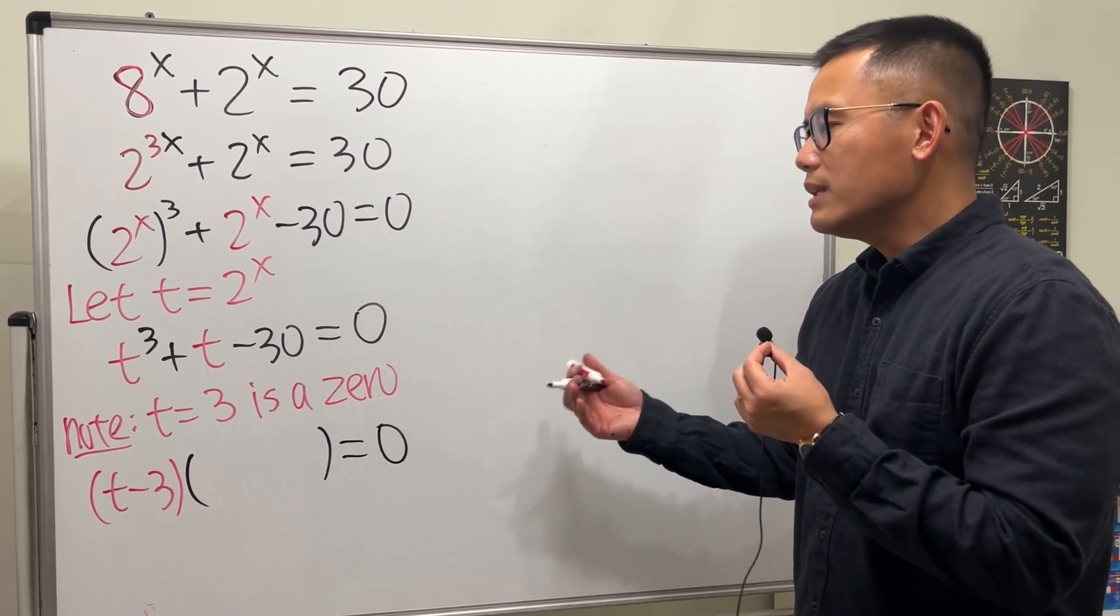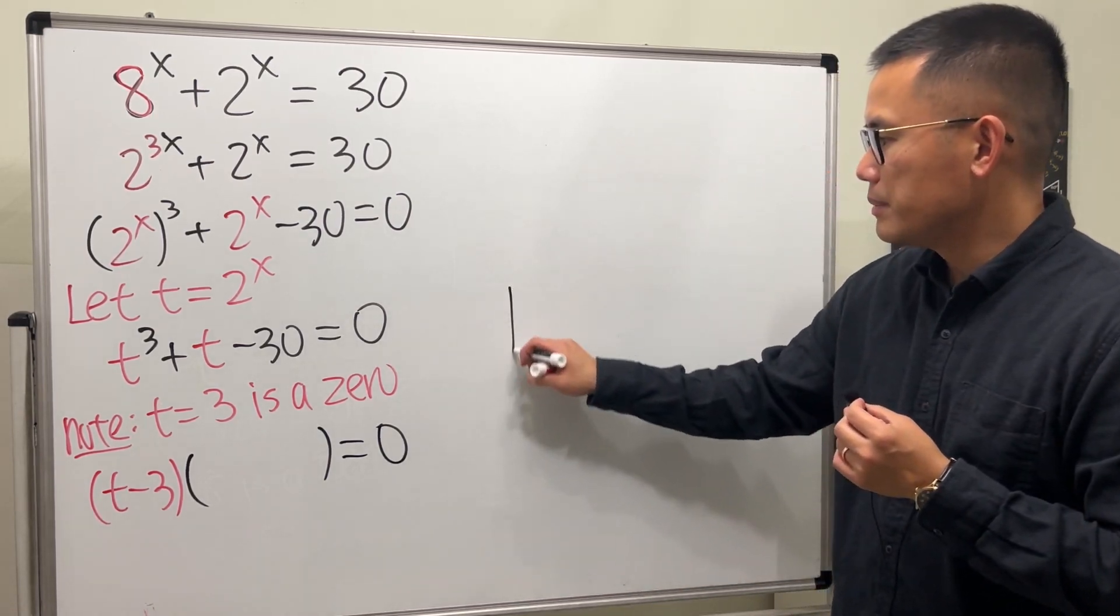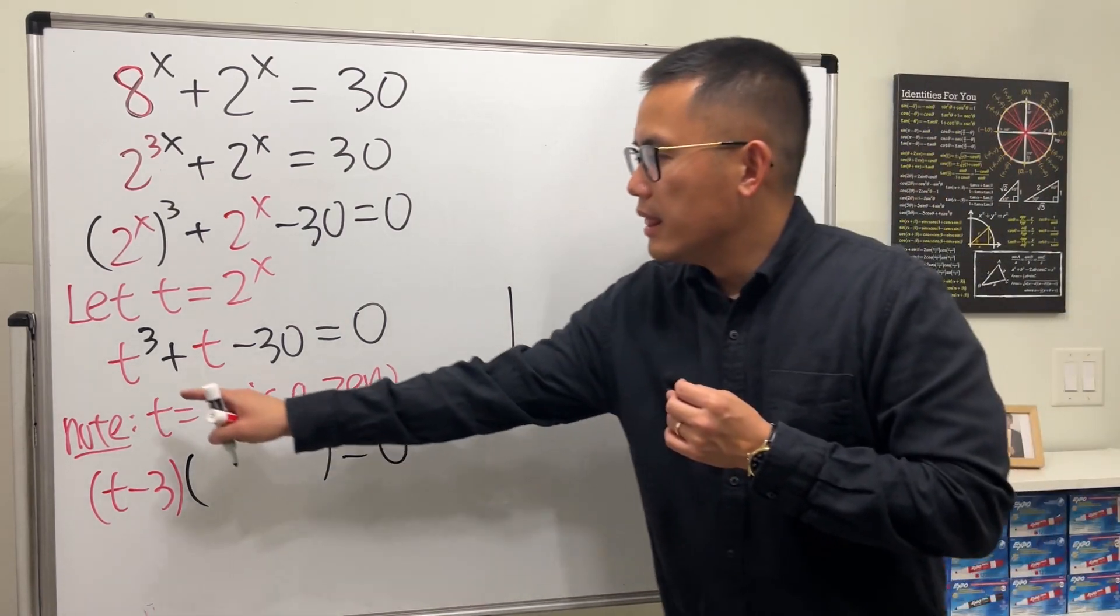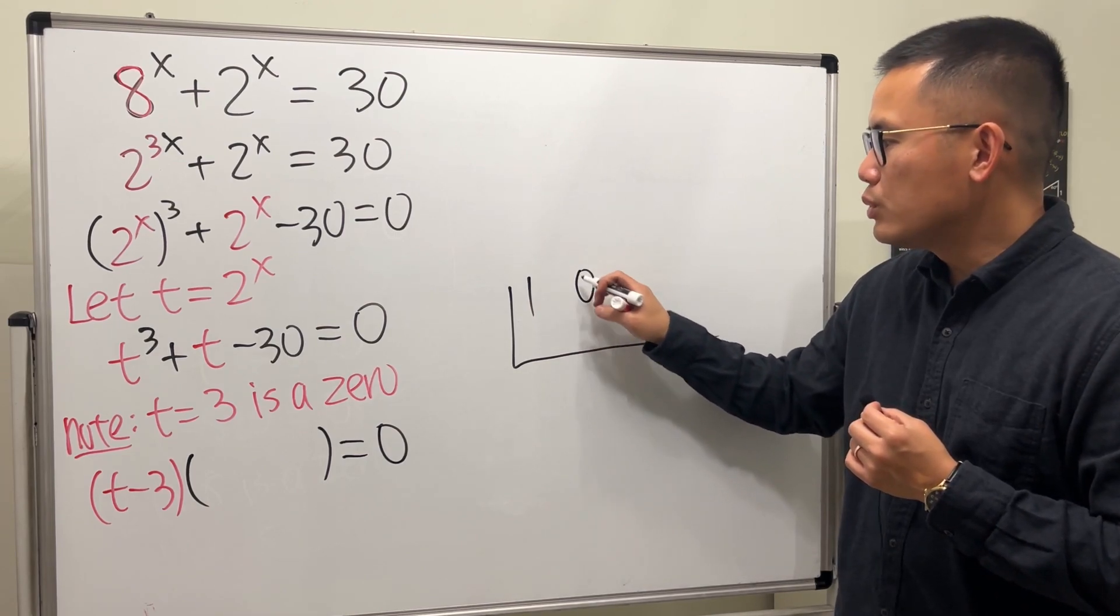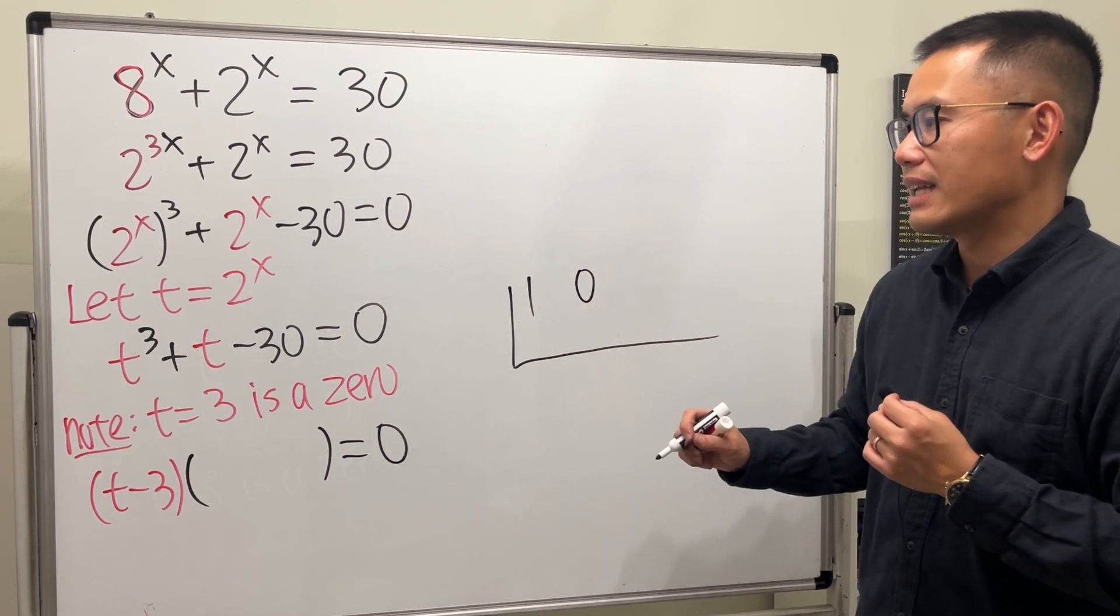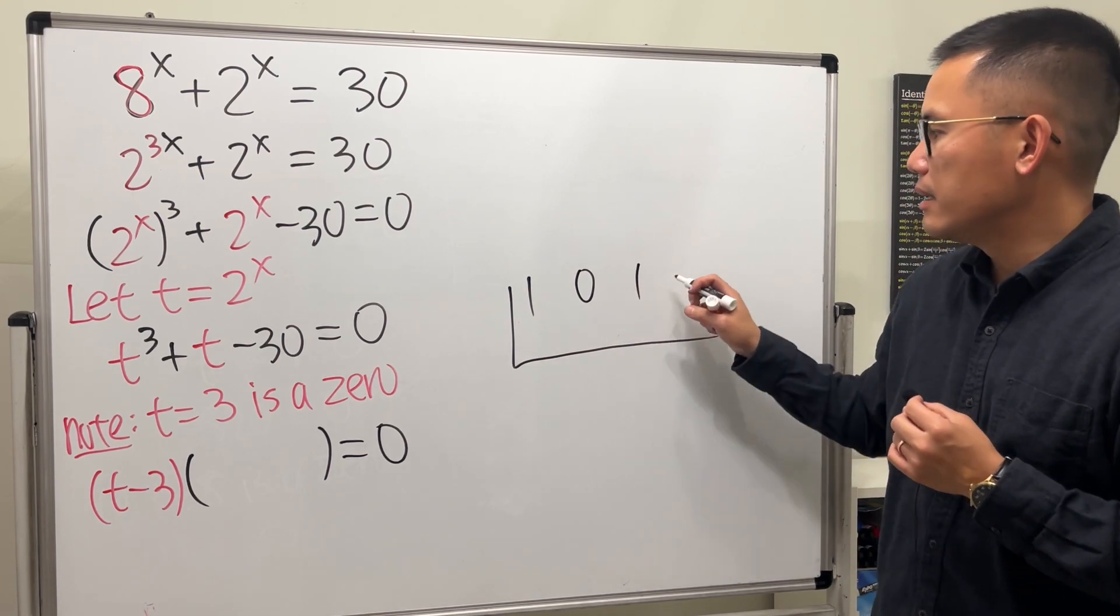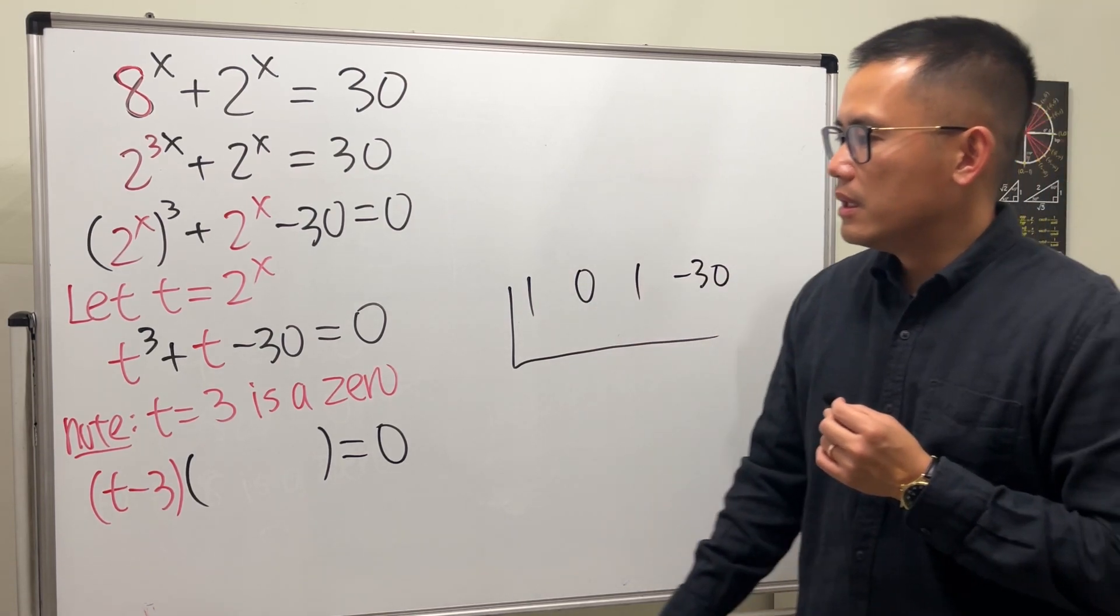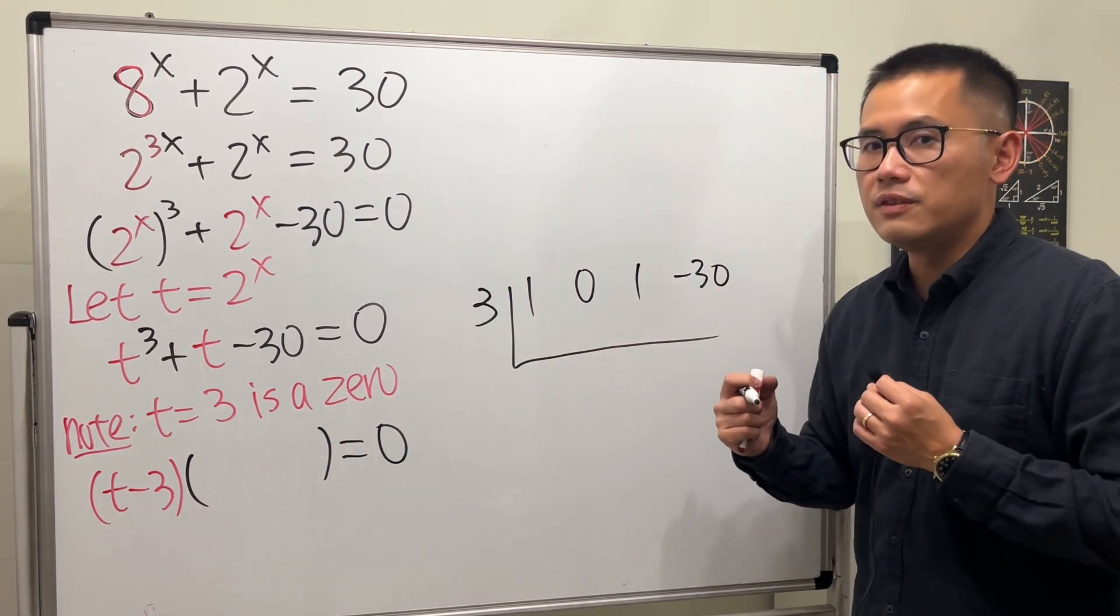So this means we can factor this as t minus 3 times something else, and then we get 0 as the result. But what's the other part, though? We can do the synthetic division for it. Let me do it right here. Let's write down the coefficients. We have 1t cubed, but 0t squared. You have to have that, right? It's like a placeholder. And then 1t, and then minus 30.